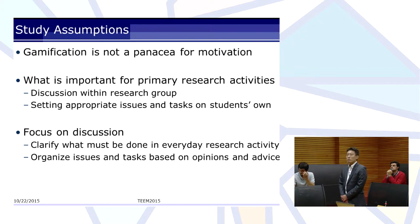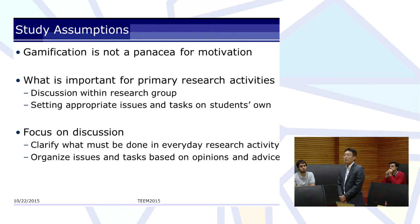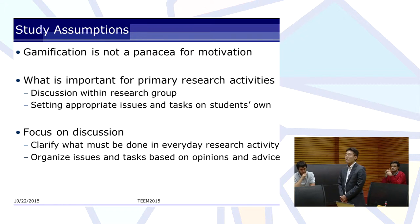Because if issues and tasks are not clear, it is difficult to set appropriate issues and tasks on their own. For example, an extremely important thing for primary research activities is discussion within research groups. So, we focus on discussion as a place to clarify what must be done in everyday research activities and to organize issues and tasks based on opinions and advice.